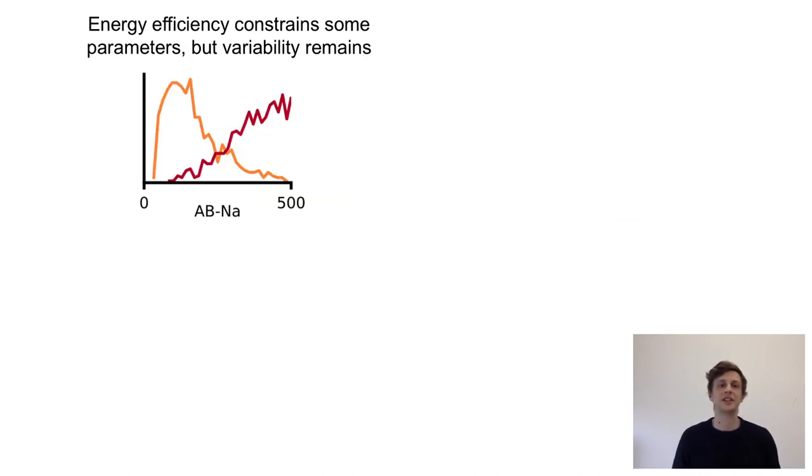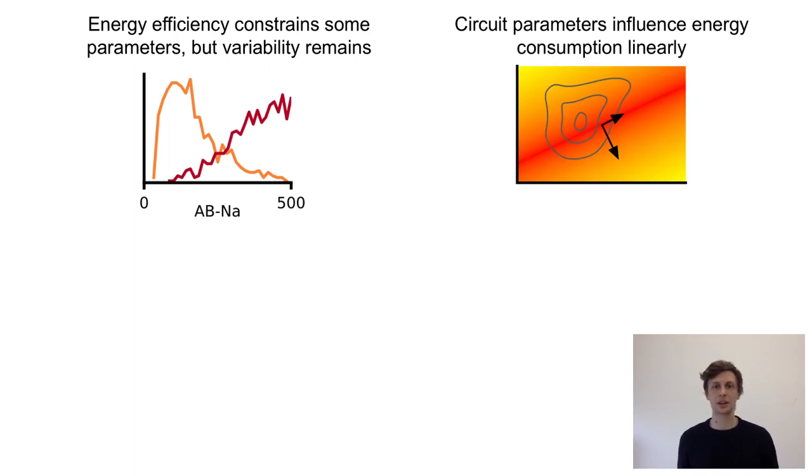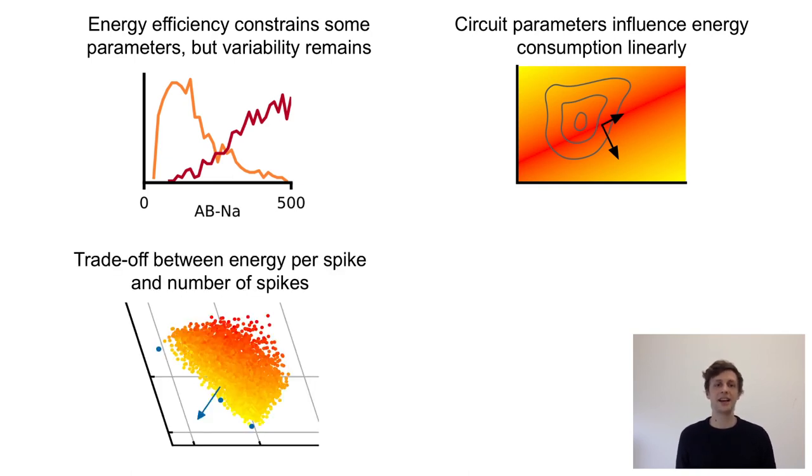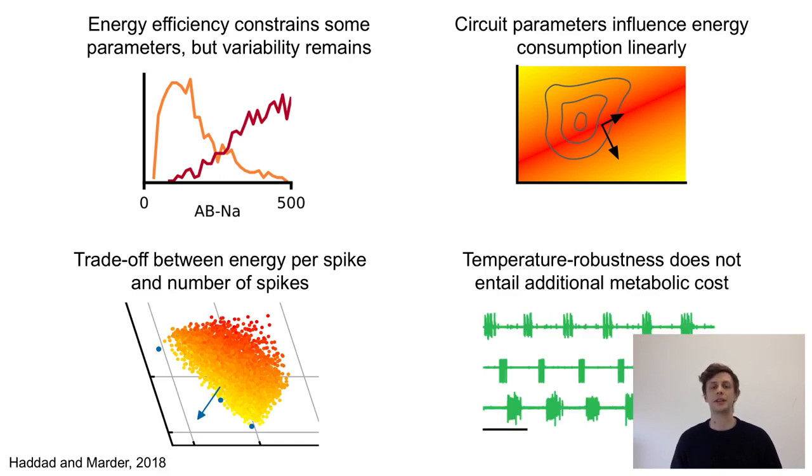First of all, we found that energy efficiency does constrain some parameters, but nonetheless there remains variability. Secondly, we show that circuit parameters influence energy consumption in an almost linear way, and this allows us to show how strongly a specific parameter influences energy. We then identify a trade-off between the energy per spike and the number of spikes. And lastly, we show that being robust to temperature increases does not entail additional metabolic cost.